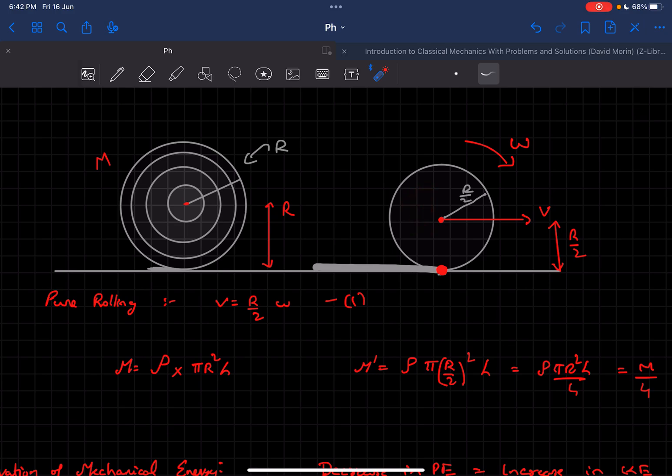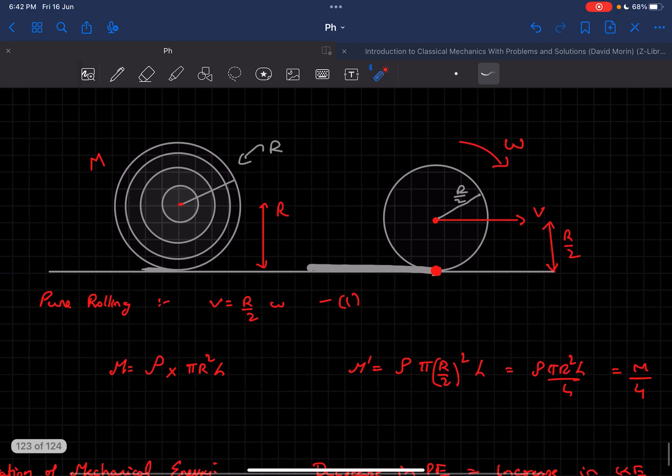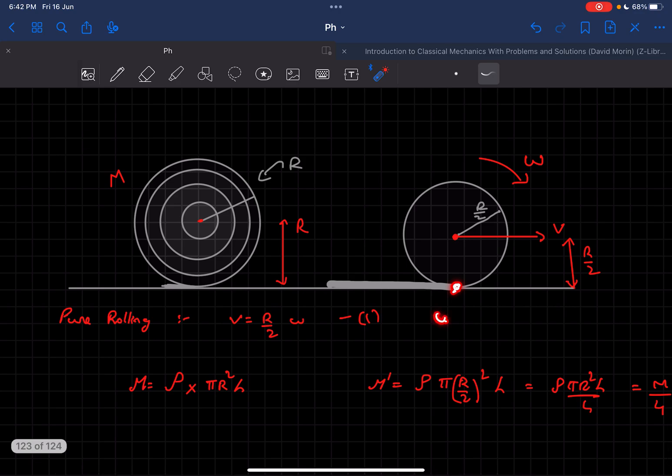Now, as we know the cylinder is performing pure rolling motion, the friction here is static.